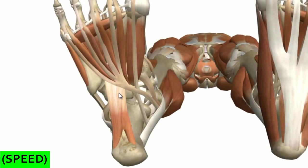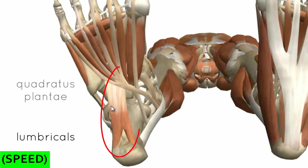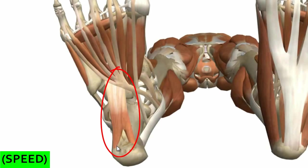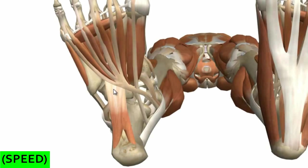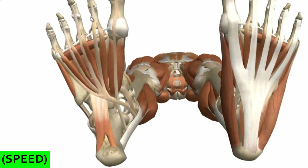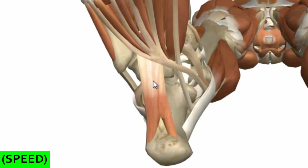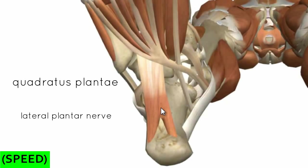We've only got two muscles in this layer - it's quite easy. In layer two we've got two muscles; in layer three we've got three. In this second layer, we've got the quadratus plantae and the lumbricals. The quadratus plantae lies posteriorly with two heads: a medial and lateral head. The lateral head originates on the lateral process of the calcaneal tuberosity, and the medial head originates medially on the calcaneus. These two heads form a tendon that inserts onto the lateral side of the flexor digitorum longus tendon, helping it flex the lateral toes (two to five). This muscle is innervated by the lateral plantar nerve.